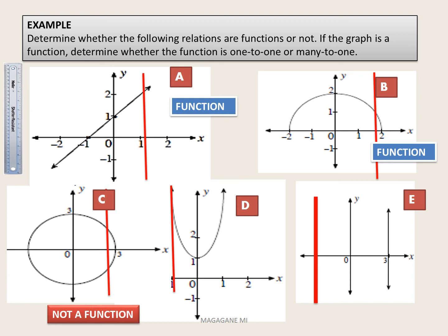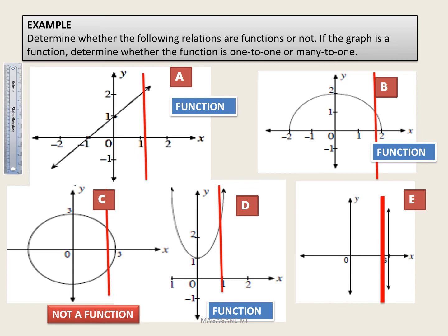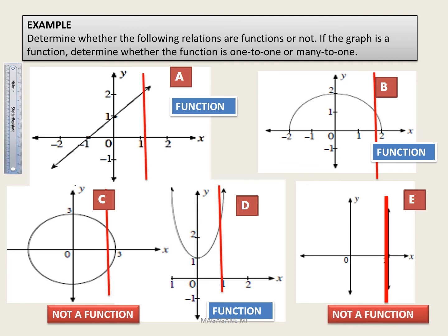For graph D, the vertical line cuts it once, so this is a function. For graph E, this is the line x equals 3 — for every y value, x equals 3. The vertical line cuts this graph many times, so any vertical line x equals a constant will always not be a function because the vertical line test cuts the graph many times.